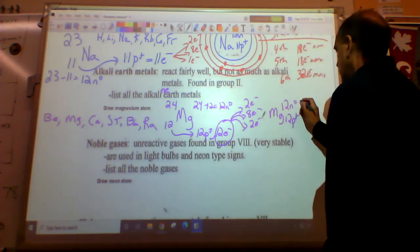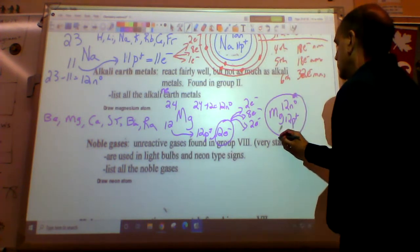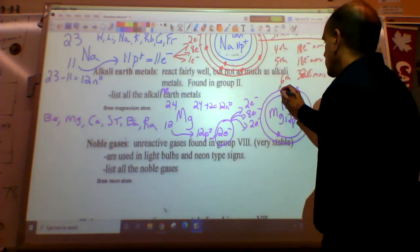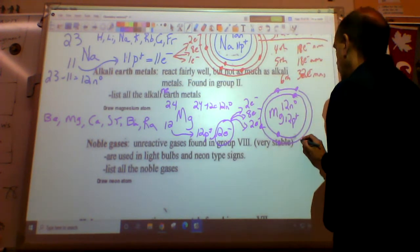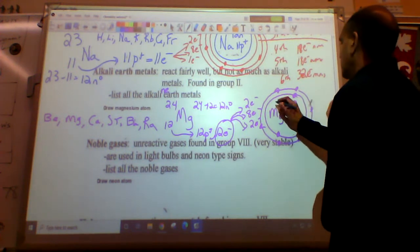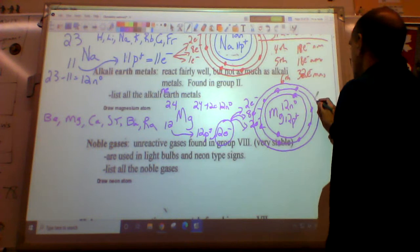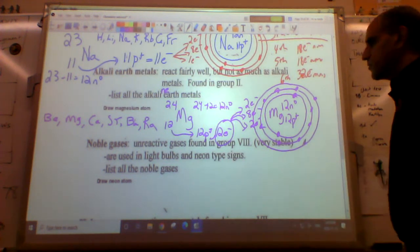I'm going to draw that in. One, two in the first shell. Next shell can hold eight - one, two, three, four, five, six, seven, eight. Last shell can hold two. There's magnesium.